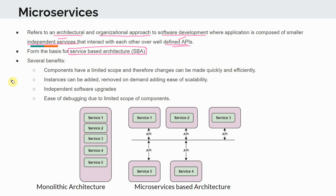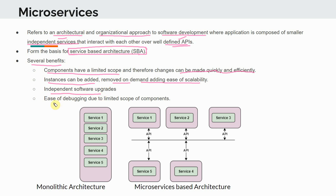There are several benefits of using microservices. You have components of limited scope, and therefore changes can be made quickly and efficiently. Instances can be added or removed on demand, adding ease of scalability. Microservices ties very well together with the concept of containers and virtual machines — if each service is running inside a VM or a container, we can scale it up and down very quickly. We can also do independent software upgrades.